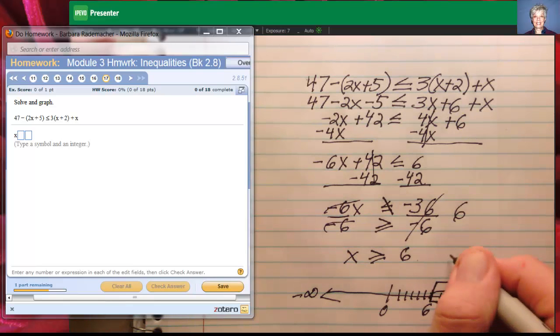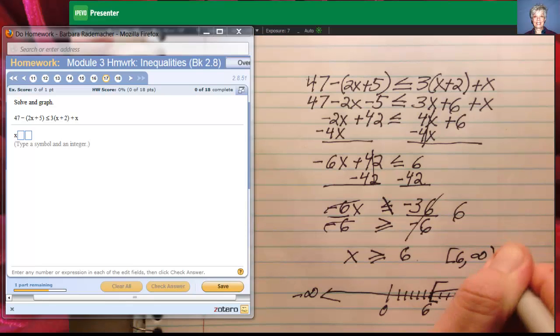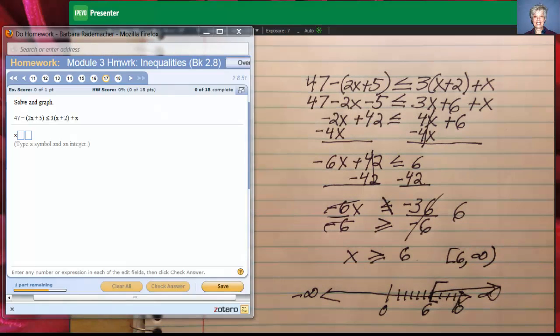So that tells me that my interval notation would be bracket 6 comma infinity parenthesis. But no, the problem isn't asking us to do any of that. All the problem wants is for us to write the solution, which is that right there.